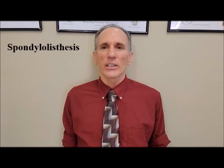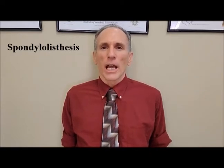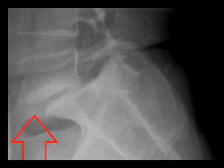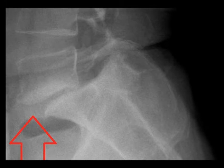Spondylolisthesis. I'm going to speak about what exactly spondylolisthesis is, some of the sports that can cause it, some of the activities that can cause it, the symptoms of this condition. I'm going to talk about imaging a little bit, and I'm also going to talk about treatment that can be performed by a doctor of chiropractic, and also procedures that you can do yourself to help with this condition. Spondylolisthesis is the forward translation of a vertebrae as compared to the vertebrae below it. It is most common in the lower lumbar spine at L5-S1, meaning that the L5 vertebrae has moved forward as compared to the sacrum.